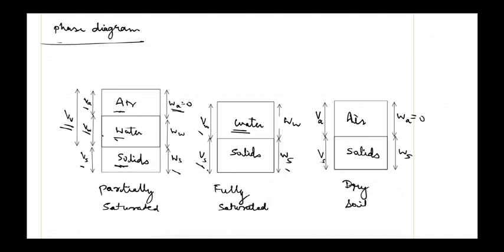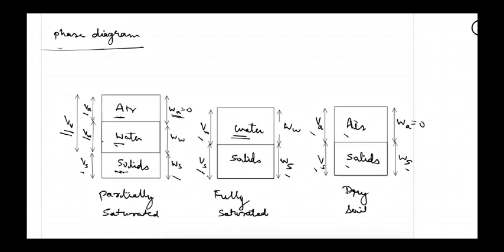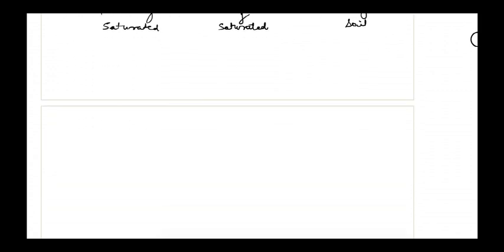If it is a completely dry sample, only solids and air are present — no pores are filled with water. So we have volume of solids and volume of air, and on the right-hand side only the weight of solids, because the weight of air is again zero. Now let's look at some important definitions in soil mechanics.